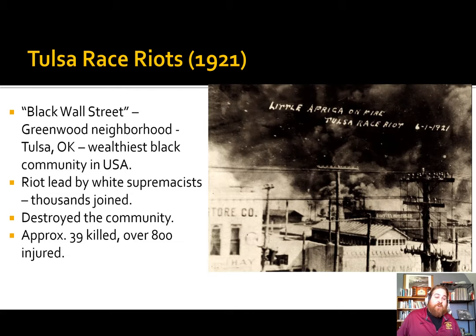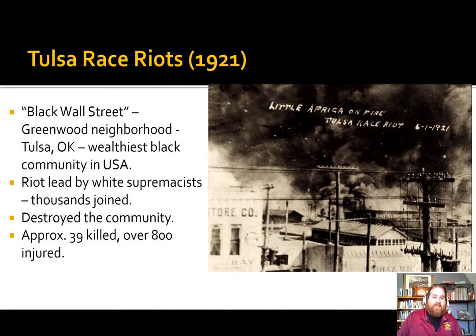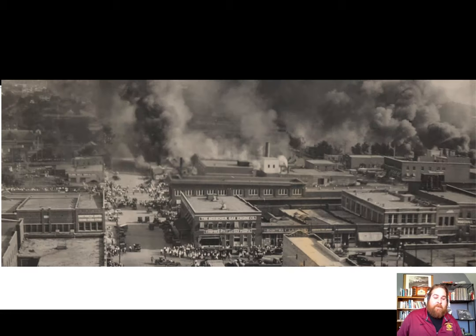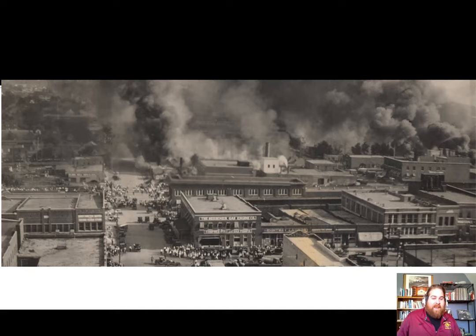In 1921 in Tulsa, Oklahoma, the most wealthy black community in the country — they even called it Black Wall Street, officially known as Greenwood — had doctors, lawyers, and investment firms holding stocks on Wall Street. But a mob whipped up by white supremacists attacked and destroyed the entire neighborhood, killing 39 people, injuring 800, and destroying everything they had built. By the time it was over, there was no more Greenwood neighborhood, no more Black Wall Street. Racial violence is almost commonplace and in many cases not even prosecuted.